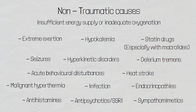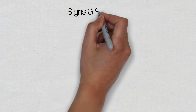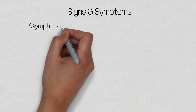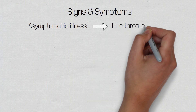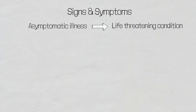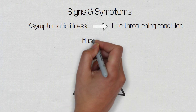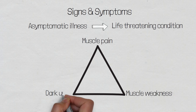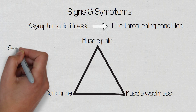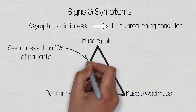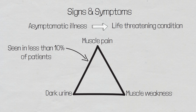Now we have discussed the causes of rhabdomyolysis, let's look at how these patients may present. Rhabdomyolysis ranges from an asymptomatic illness to a life-threatening condition. This means that symptoms are going to vary between patients, which is why the history is so important. Clinically, rhabdomyolysis is exhibited by a triad of symptoms which include muscle pain, muscle weakness, and dark urine, described as tea-coloured urine. However, this triad of symptoms is seen in under 10% of patients suffering with rhabdomyolysis, and one or two symptoms may present in isolation.